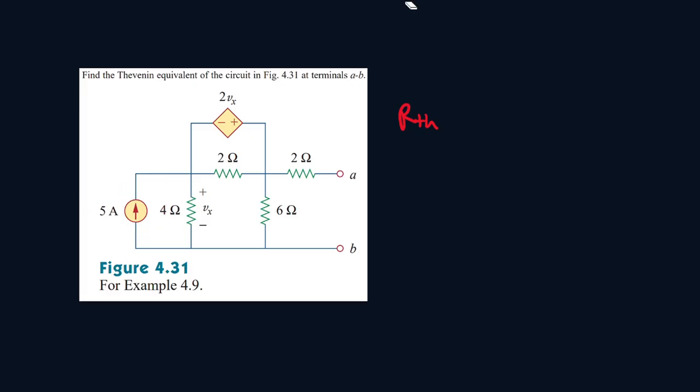So we can turn off this source, but the problem is we can't turn off this source because it's a dependent voltage source. So what we're going to do is focus on this portion. We're going to do a test charge. And let's call this test charge 1 volt. You can call it whatever you want, but let's go with 1 volt.